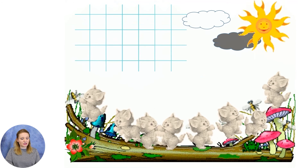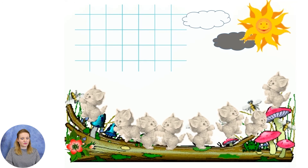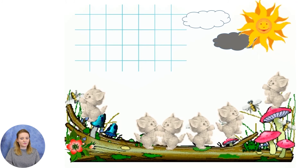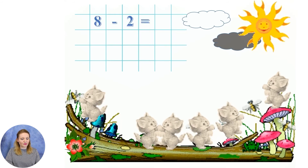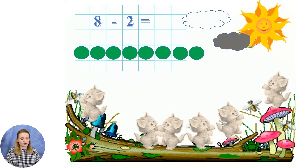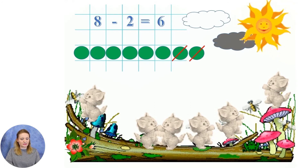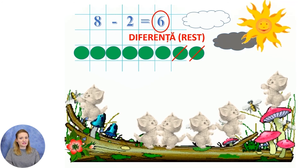Creați un exercițiu prin care veți afla câte pisici au rămas să se joace, dacă inițial au fost opt, iar dintre acestea au plecat două pisici. Opt minus doi este egal cu... Să reprezentăm acest exercițiu! Opt minus doi este egal cu șase. Vă mai amintiți cum se numește rezultatul operației de scădere? Diferență sau rest.